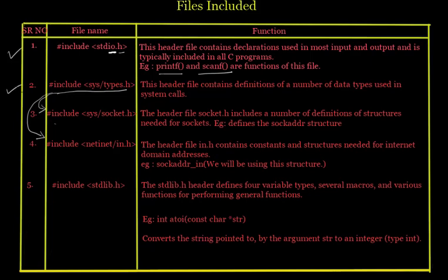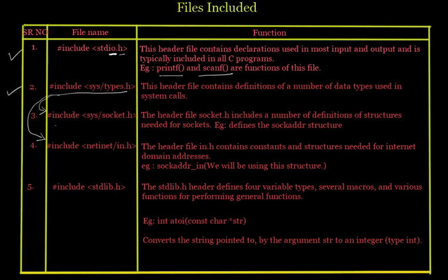The third file is socket.h, and our program revolves around socket.h because our program is about socket programming. The header file socket.h includes a number of definitions of structures needed for sockets. We get the structure sockaddr, which contains the address family, port address, and all those things built in. Then, netinet/in.h is our port file.